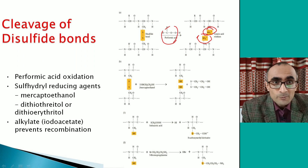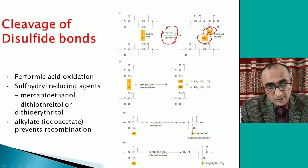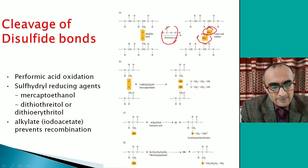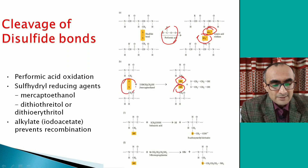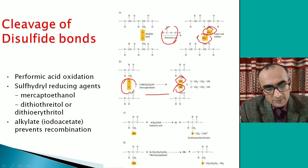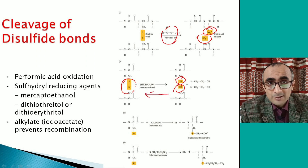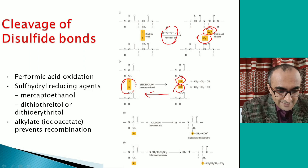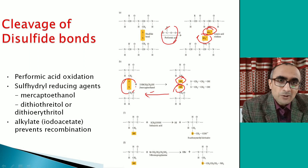Those cysteines cannot come together and form a disulfide bond again. Similarly, one can use a reducing agent like β-mercaptoethanol or dithiothreitol (DTT). In that case, the disulfide bridge is converted to free -SH cysteines. If those free cysteines are provided with an oxidizing environment, they can reform the disulfide linkage — so this is a reversible reaction.